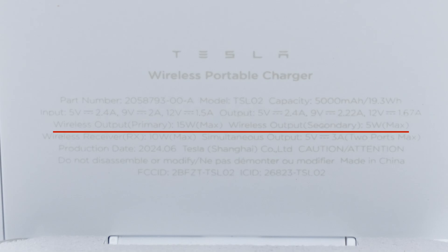The maximum wireless output, primary, is 15 Watts. The maximum wireless output, secondary, is 5 Watts. The maximum power of the wireless receiver is 10 Watts.